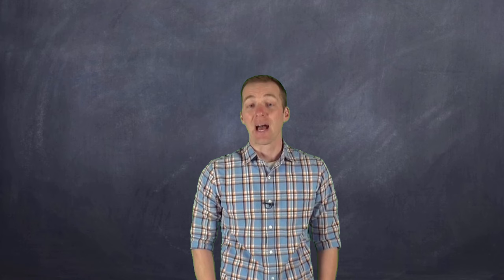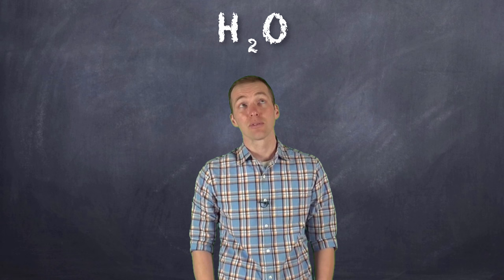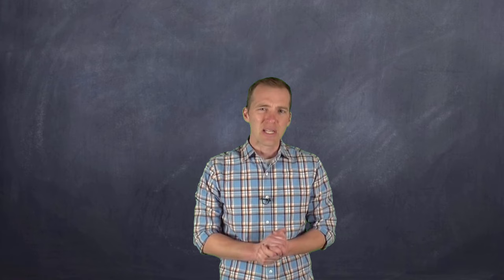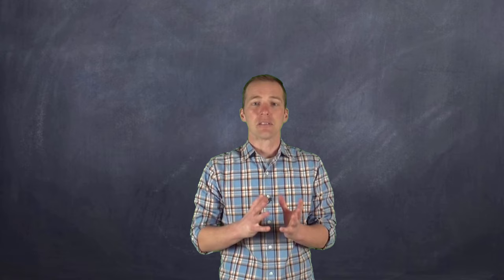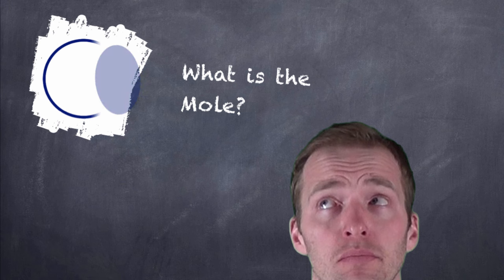The problem is we deal with atoms every day in every way — we see them as part of chemical compounds or as part of a balanced chemical equation in some sort of chemical reaction. But we're dealing with numbers of atoms, and the problem with atoms being so small is that they're really hard to count. So there's got to be something that helps us count these really small atoms and molecules, and there is — we call it the mole.